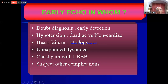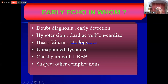Patients requiring very urgent echo include those with early doubtful diagnosis, hypotension, heart failure, unexplained dyspnea, and new left bundle branch block. These require an urgent echo, while other cases may be done within 24 hours.